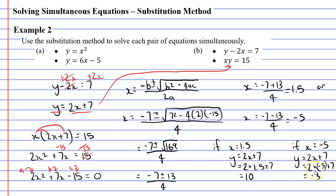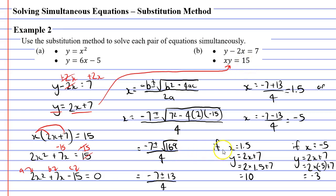I want to double check these solutions by substituting the values into xy equals 15. If x is 1.5 and y is 10: 1.5 times 10 is 15. That works. If x is negative 5 and y is negative 3: negative 5 times negative 3 equals positive 15. That also works. After checking my solutions I feel quite happy they're correct. That concludes this video on example 2 — remember to read the description below for links to workbooks that relate to this video.